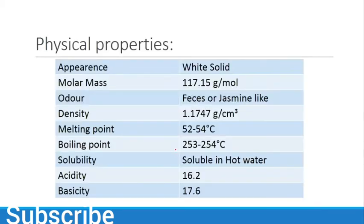Physical properties: Appearance is white solid, molar mass 117, odor jasmine-like, density 1.17 grams per centimeter cube, melting point 52 to 54 degrees, boiling point 253 to 254 degrees. Solubility is soluble in hot water, acidity 16.2, basicity 17.6. You don't have to be confused between melting points - in some reference books you'll find 52, 53, or 54, so I combine all and write 52 to 54 degrees. For boiling point, we have a range of 253 to 254 degrees.